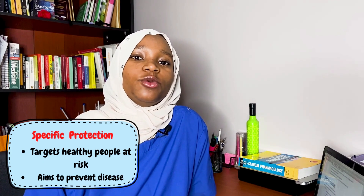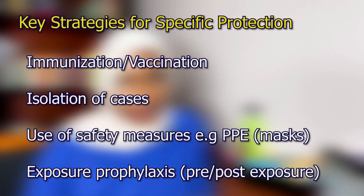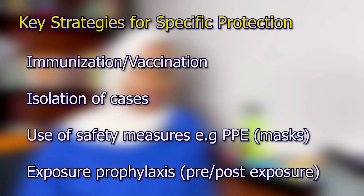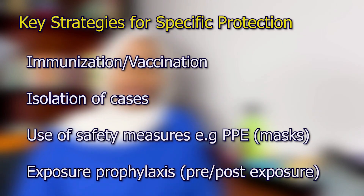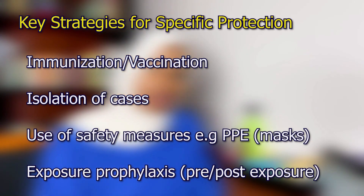The second level, specific protection, targets people at increased risk of disease and aims to decrease the likelihood of developing it. Key strategies include immunization or vaccination, which are very important; isolation of cases in infections or infestations; use of safety measures like masks, gloves and other personal protective equipment; and exposure prophylaxis — either pre-exposure prophylaxis, such as for a person with an HIV-positive partner, or post-exposure prophylaxis, such as after a needle prick injury from an HIV-positive person.